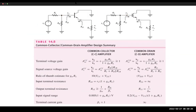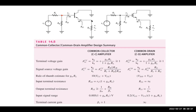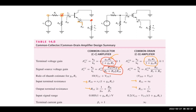For the common collector amplifier, the input is at the base and output is at the emitter. The gain from base to emitter is gm·RL divided by one plus gm·RL. The output impedance, looking from the emitter, is r_pi over beta, which equals one over gm — also called RE.